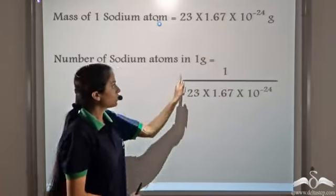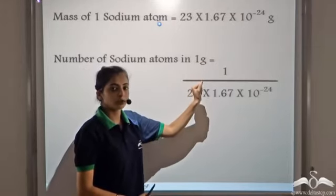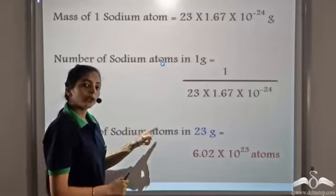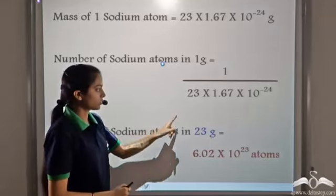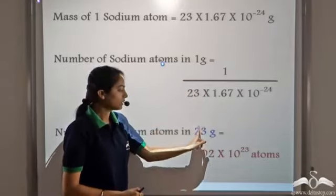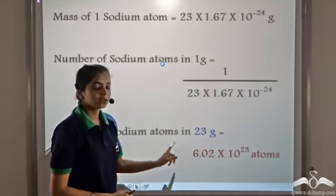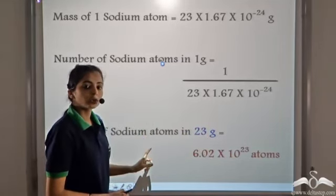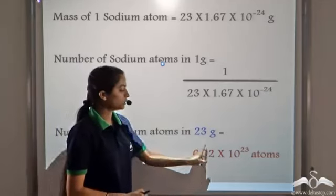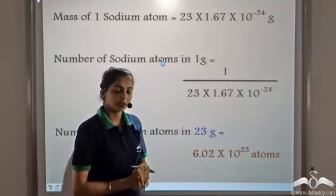Now instead of one gram, we take 23 grams of sodium. When we take 23 grams of sodium, the 23 in the numerator and the 23 in the denominator get cancelled. So we get the number of sodium atoms in 23 grams equal to 6.02 × 10²³ atoms.